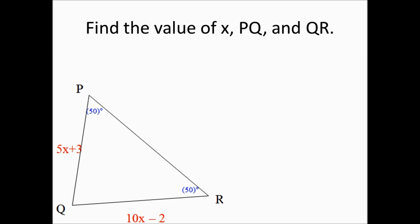Here's another example of the converse of the base angles theorem. Notice that we have a triangle in which two angles are congruent to each other. Therefore, the sides opposite those two angles are also congruent. The measurement of angle P and angle R are both equal to 50 degrees, so we set 5X plus 3 equal to 10X minus 2. The rest becomes algebra.